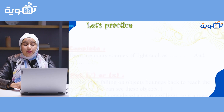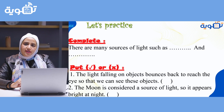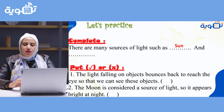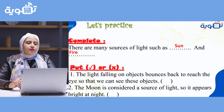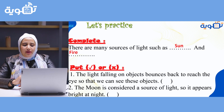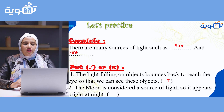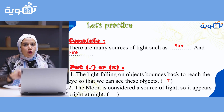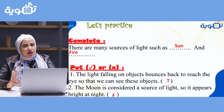So let's practice. Complete the following: there are many sources of light such as — think about it — sun, of course, fire, candles, torch. Now put true or false. The light falling on objects bounces back to reach the eyes so that we can see the object. True! The moon is considered a source of light and appears bright at night. No — the moon is not a source of light. So it's going to be false.